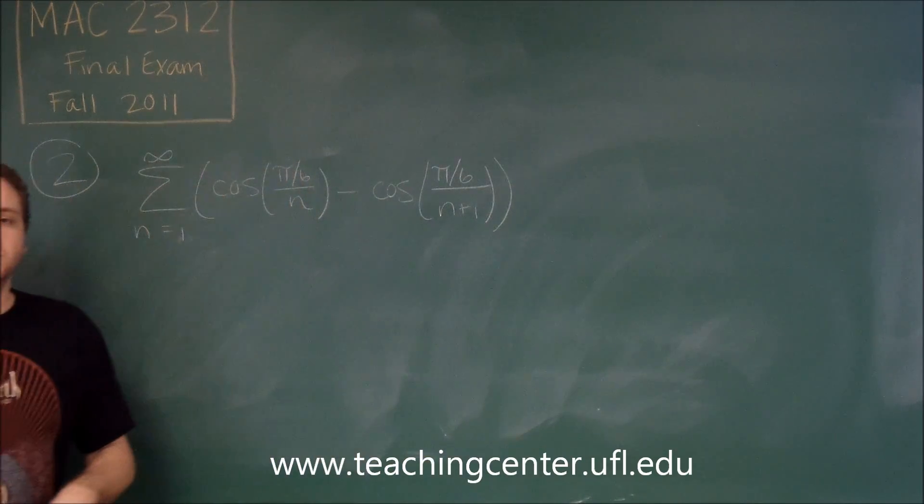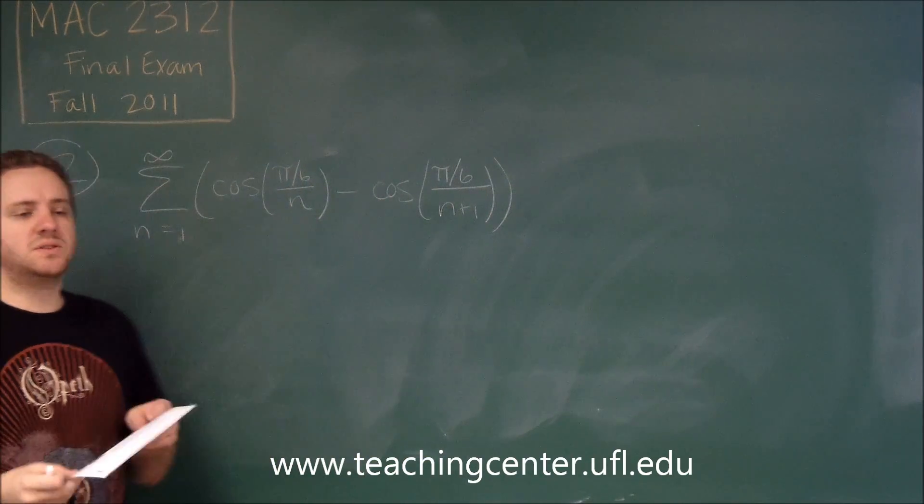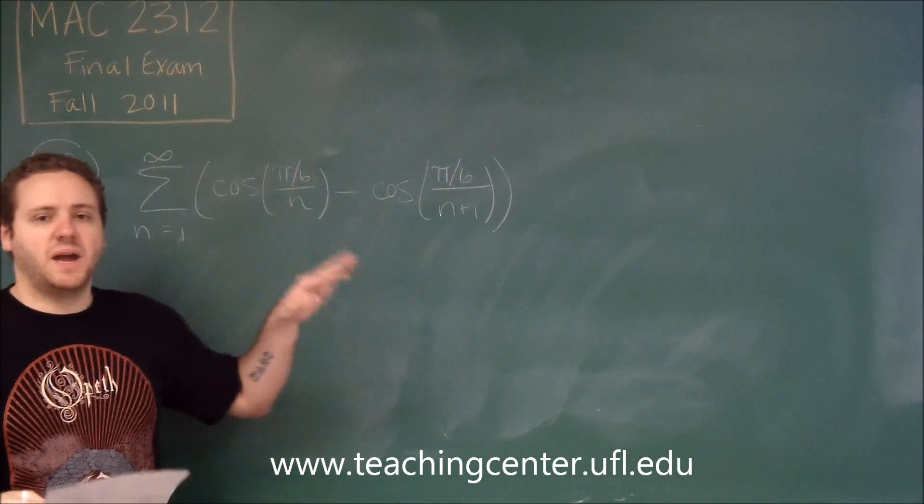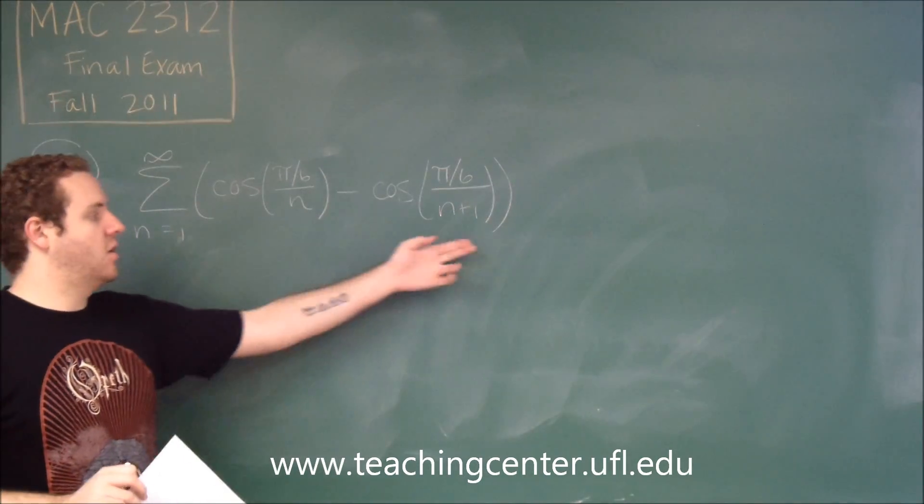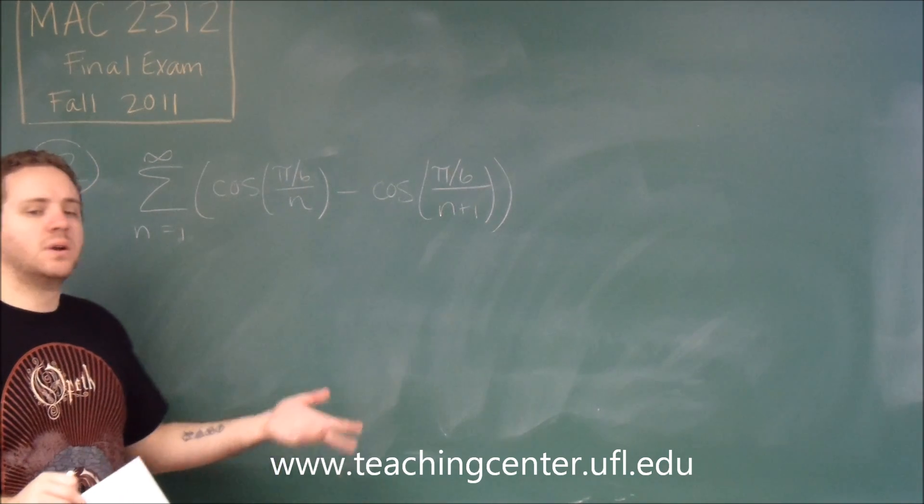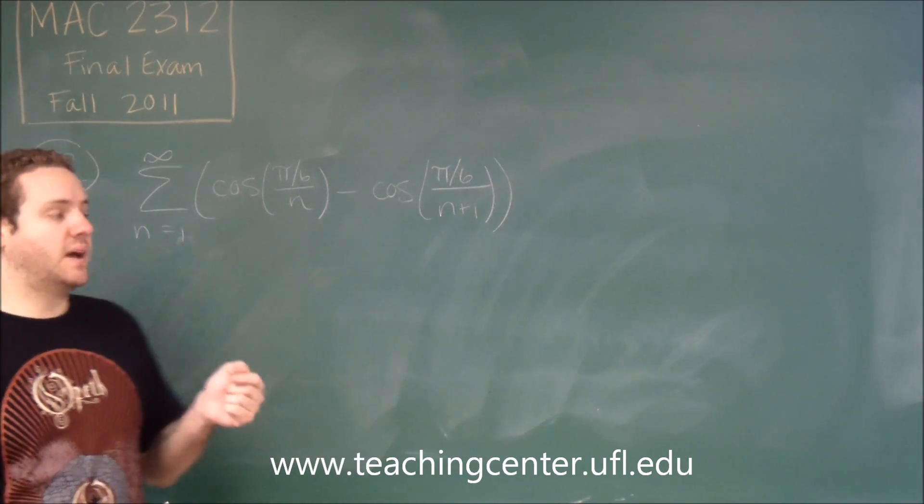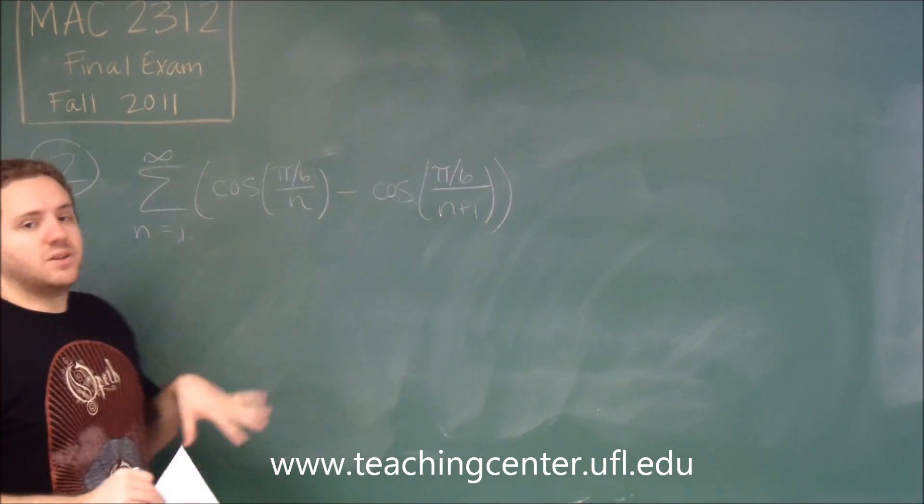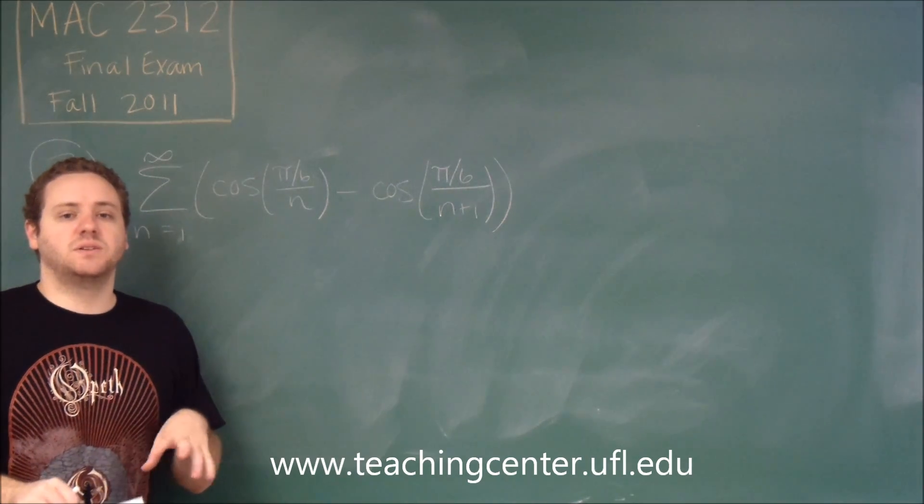What should clue you in that this is a telescoping series is we have two terms that are subtracted, and our n's are off by a certain constant. We have n and n plus 1, or you'd have n and n plus 2, something like that. So this is definitely telescoping.